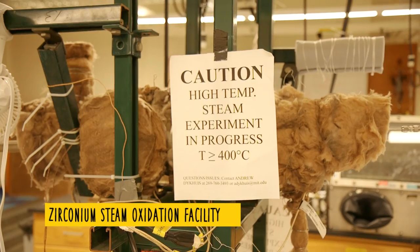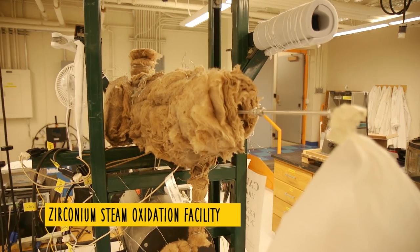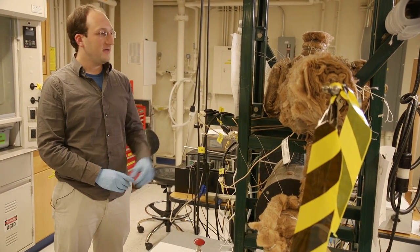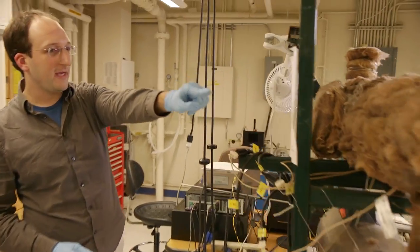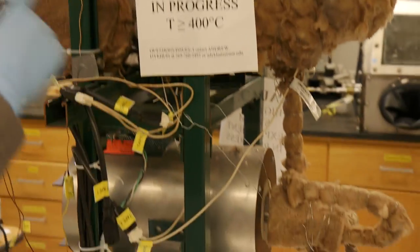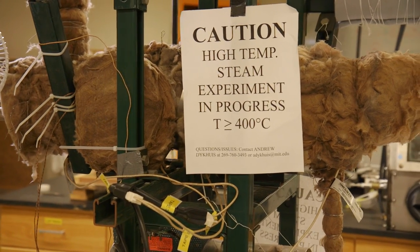So this right here is a zirconium steam oxidation facility. We take different alloys of zirconium, cut into little pieces, then put them hanging on a bunch of strings in this chamber right here, and then send in steam at 400 degrees Celsius to simulate what would happen in a nuclear reactor in an accident condition.